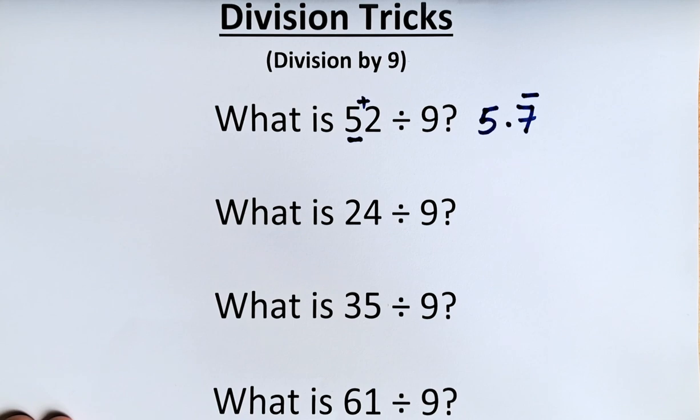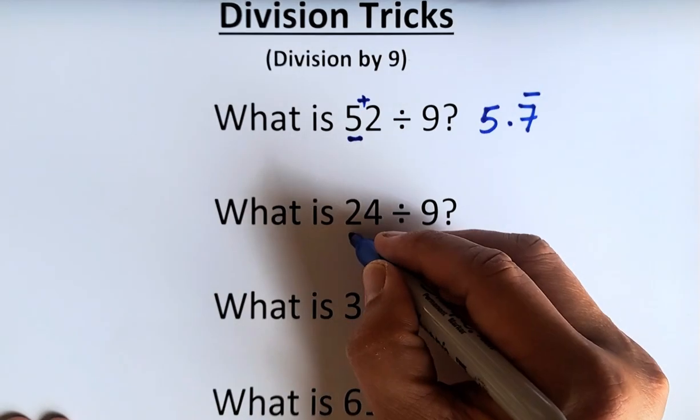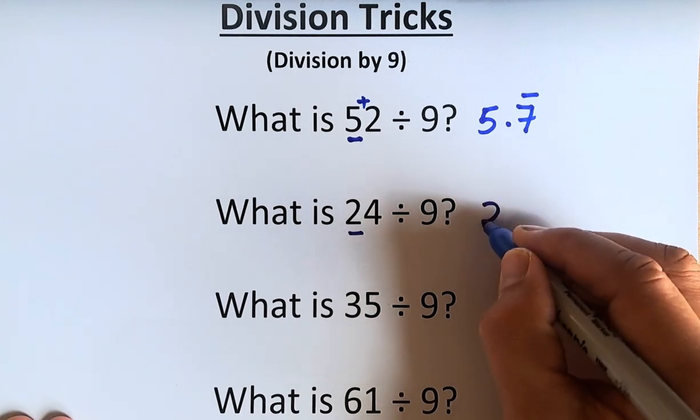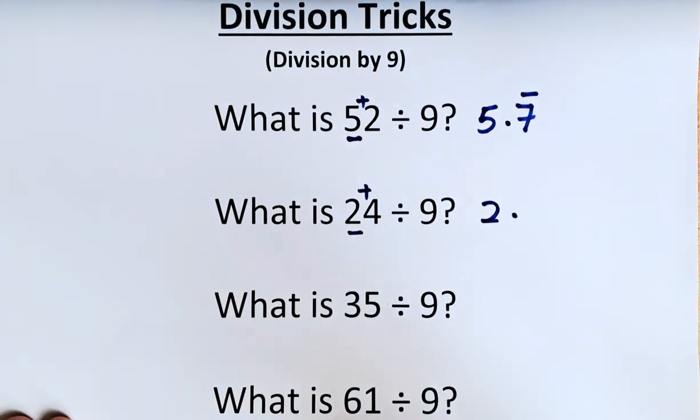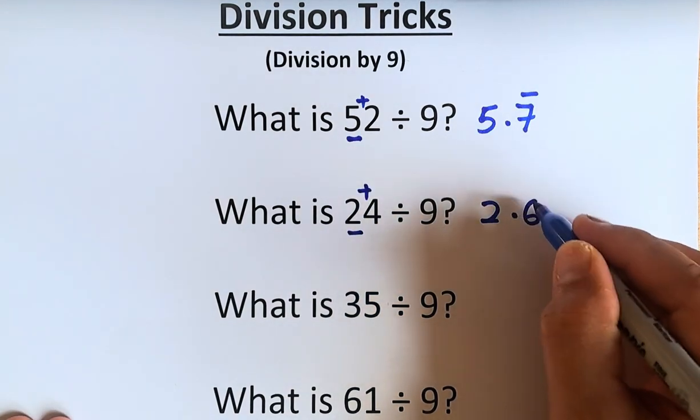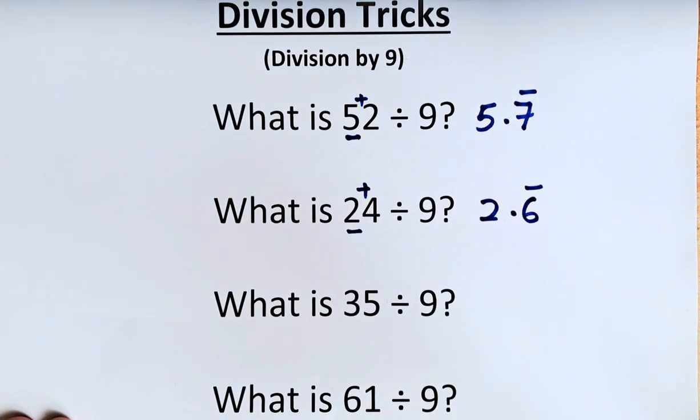Similarly, what is 24 divided by 9? So to do that, 2 at the first digit remains. So it's going to be 2 point. And then you're going to add the 2 numbers. 2 plus 4 is going to be 6. So it's going to be 2.6 recurring.